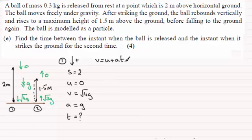So using it then what we've got is V which is root 4g so root 4g equals U which we know is 0. So it's A which is G times the time T.